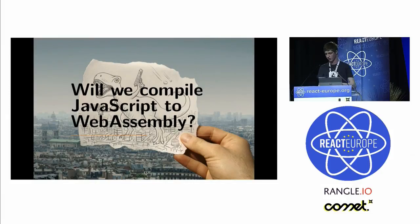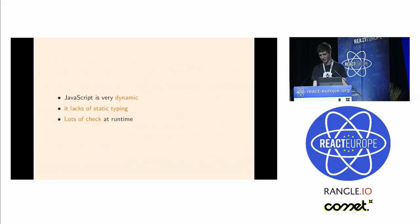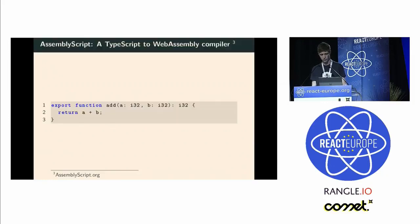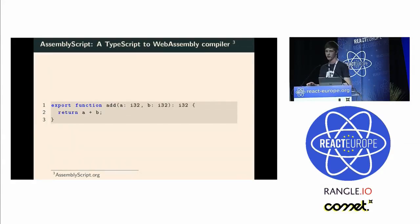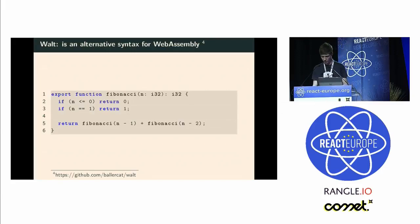Another question is: will we compile our JavaScript projects to WebAssembly? No, please don't. As I said, JavaScript is too dynamic — it has no static typing and it has a lot of runtime checks, which means it will end up being super slow. But I have some good news: there are a couple of languages that are JavaScript syntax-friendly. AssemblyScript takes TypeScript and compiles it down to WebAssembly. So if you're used to TypeScript, you can just take it and compile it down to WebAssembly. Similarly, you have Volt, which is a new language but really similar to JavaScript, and this particular example is twice as fast as JavaScript.